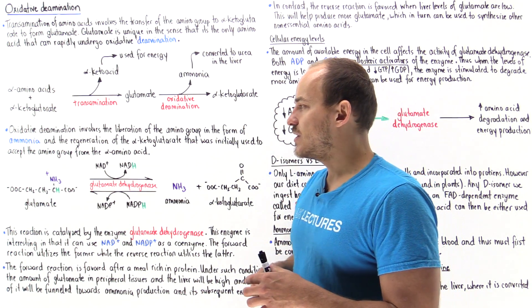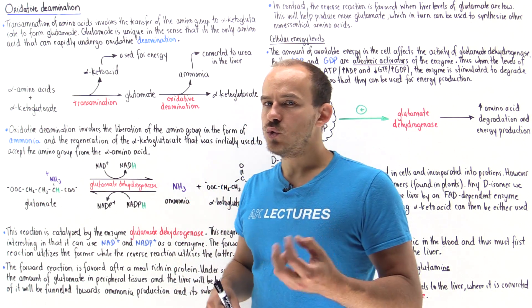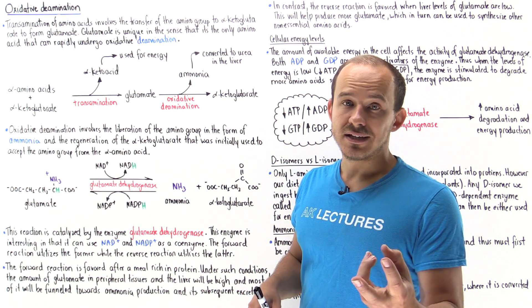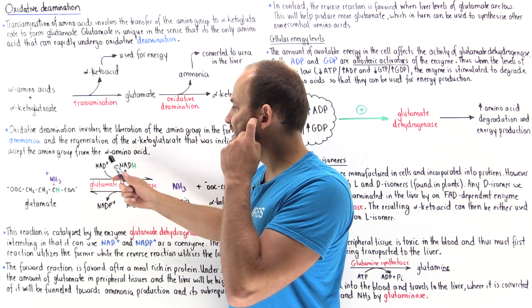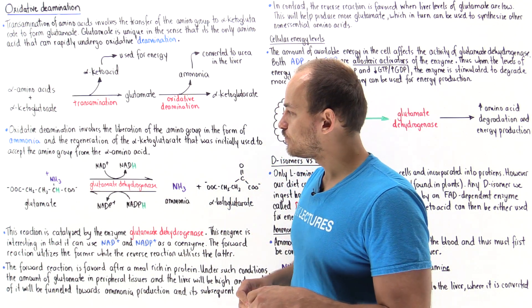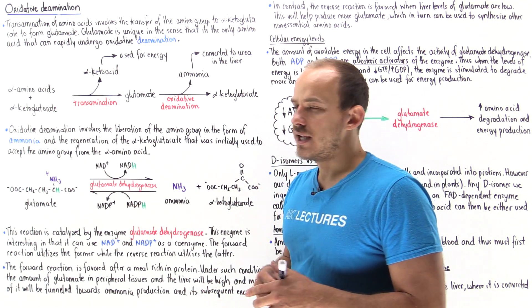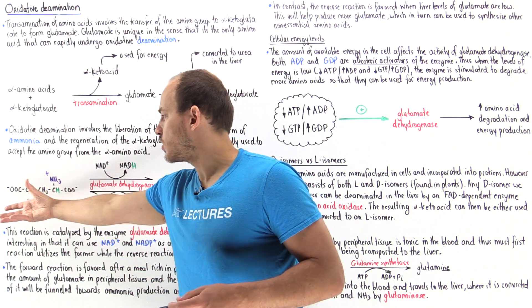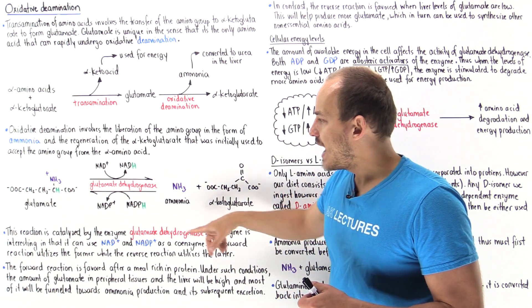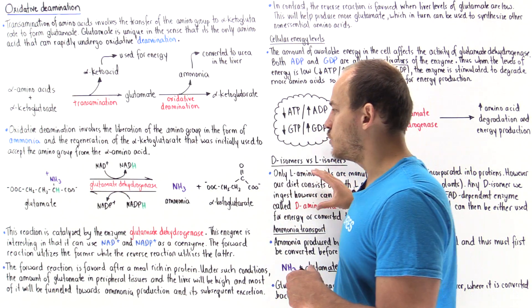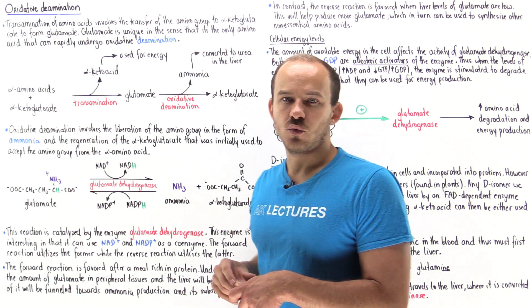This glutamate dehydrogenase is interesting because it can use two coenzymes. It can use NAD+ and it can use NADP+. NAD+ is used predominantly if we're going in a forward direction and NADP+ is used predominantly if we're going in the reverse direction.